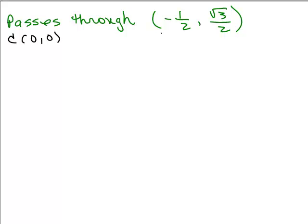If it goes through 0, 0 and passes through that point, you could imagine approximately what that circle looks like. Here's the center. Let's say that's negative 1 and that's 1. So we've got negative 1 half, square root of 3 over 2 — it's somewhere up here. That's very approximate. Square root of 3 over 2 is about 1.7 over 2, so it's about 0.85.